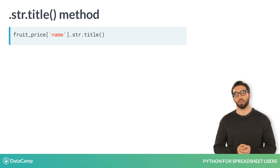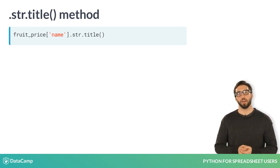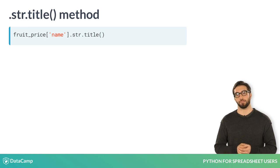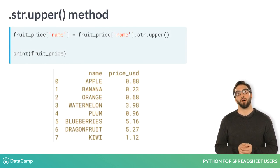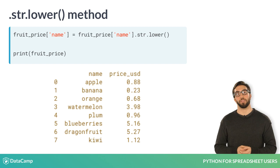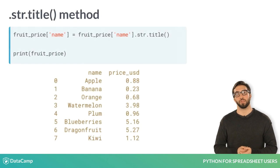As we've seen previously when filtering, we can access an existing column by placing the column name in quotes within brackets next to the name of our data frame. Then we place the .str.title method to alter the name column's entries to be title case instead of uppercase. To save this change, we simply assign the existing column to what we've written. Similarly, the .str.upper method turns all column entries into uppercase characters, and the .str.lower method turns all column entries into lowercase characters. For the name column, we'll stick with title case.